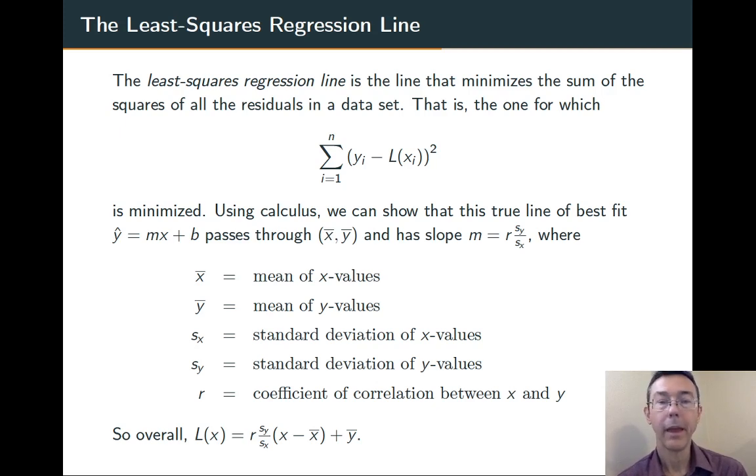We can do that using calculus, and that'll give us the equation of a least squared regression line. It turns out that that line passes through x bar, y bar, where x bar is the sample mean for the x's, and y bar is the sample mean for the y's.